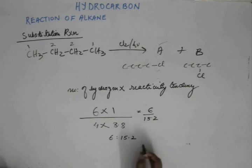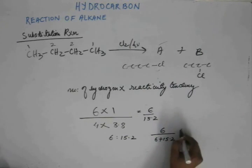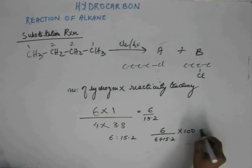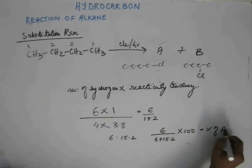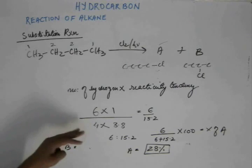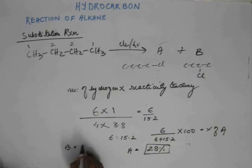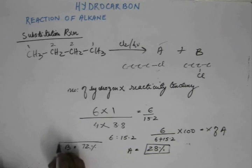So to get the percentage of A, you have to get the reactivity for A by total reactivity into hundred. This will give you percentage of A. Now if you do the calculation, this will come out as 28%. So the rest of A is 28%. So the rest of B, you can subtract it by hundred and get 72% as B.